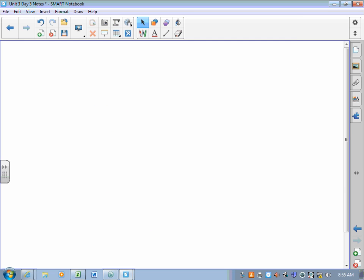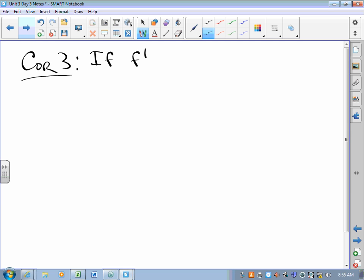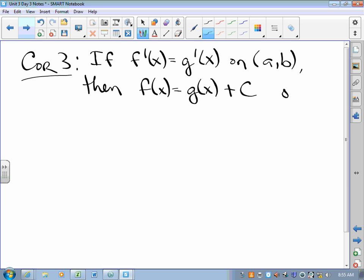Which brings me to corollary 3. Corollary 3 says if F prime of X equals G prime of X on some interval, then the one is the other factor with a shift, a vertical shift on AB. And again, one of those things that makes sense to us, that we say, okay, if two functions have the same derivative, then they must be plus or minus a constant, the same thing.